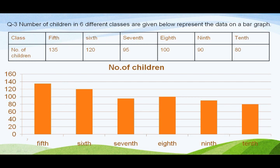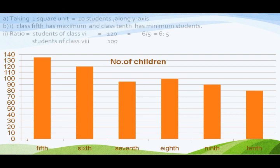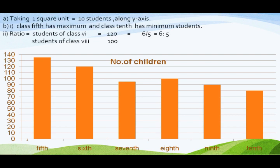Along the y-axis, you can choose the scale — 20-20 ka gap bhi le sakti ho, ya 10-10 ka gap bhi le sakti ho, showing 10-10 children per unit. Along the y-axis, you can also take 1 square unit equal to 10 students. Similarly, aap isi information ko show kar sakti ho by drawing the bar graphs.